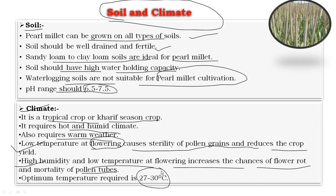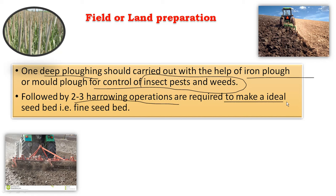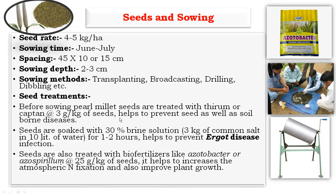Next, the field or land preparation. Pearl millet is a shallow-rooted crop with adventitious roots and requires one deep plowing with iron plows or moldboard plows for control of insect pests and weeds, followed by two to three harrowing operations to make an ideal seedbed. A fine seedbed is required because pearl millet seeds are very small in size and hence require a firm, loose, fine seedbed for better germination and growth of the crop.